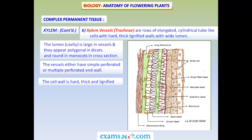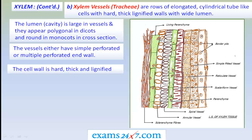The process of lignification takes place in different ways. It begins with thickening in the form of a ring, when the vessel or tracheid is called annular. Slowly the ring-like thickening becomes spiral, then ladder-like, then network-like, and finally only certain small areas remain thin while the rest of the wall becomes highly thickened due to lignification.